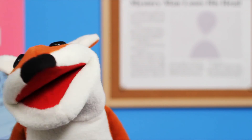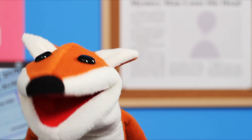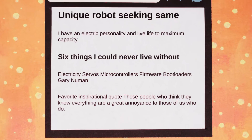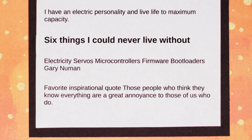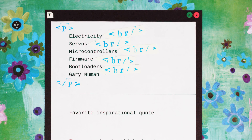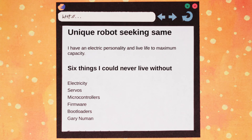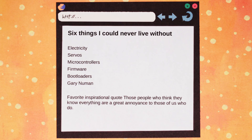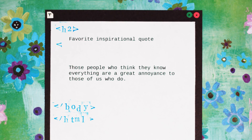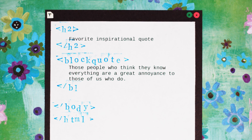I'll put the six things you could never live without in another paragraph tag, but it's a little hard to read without line breaks, so let's use the br tag to break them up. Now, your inspirational quote is text taken from another source, so it should go inside of a blockquote tag.